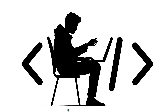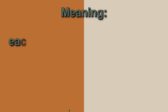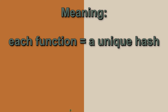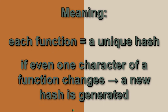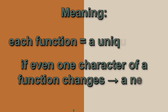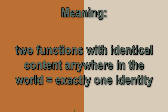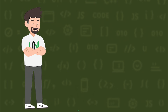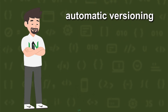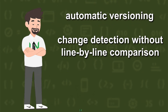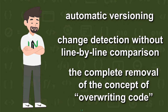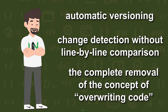Each function equals a unique hash. If even one character of a function changes, a new hash is generated. Two functions with identical content anywhere in the world equal exactly one identity. The result: automatic versioning, change detection without line-by-line comparison, and the complete removal of the concept of overwriting code.